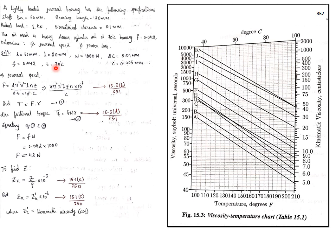T represents the temperature of the oil. Now let's see how to solve the problem. Initially, he is asking to find the journal speed. This is the formula pertaining to force acting on the bearing — you can take this from page number 351. Torque T is force into perpendicular distance R. Also, the frictional torque from page 351 is Tf equals F into W into R. If you equate these two equations, capital F equals small f into W. Substitute the values of friction and radial load to get the value of F.